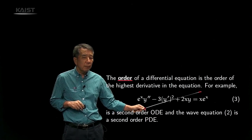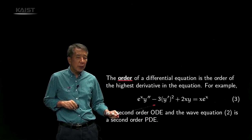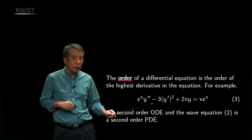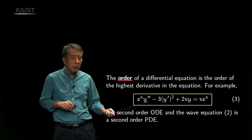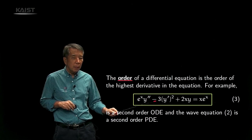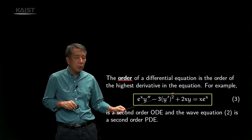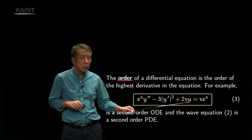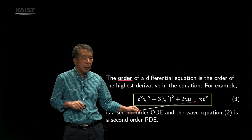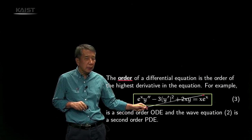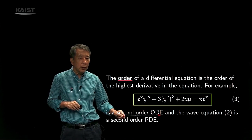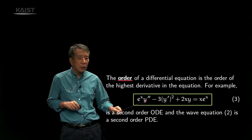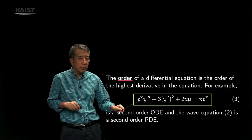For example, differential equation 3, which is an ordinary differential equation: e to the x times y double prime minus 3 times y prime squared plus 2x times y is equal to x times e to the x. This is a second order ordinary differential equation because the highest derivative involved for the unknown y is 2.